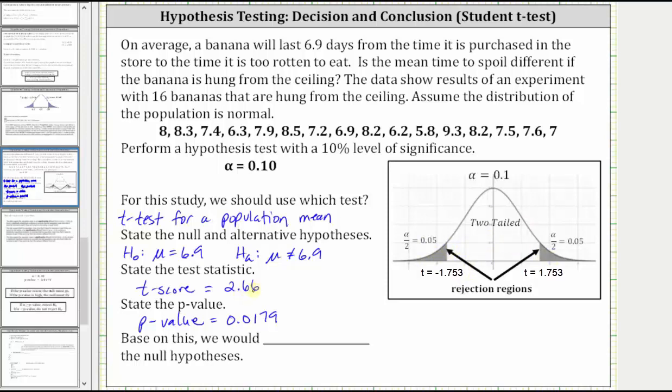And notice how a t-score of 2.66, or a t-score of negative 2.66, would fall into the rejection region, and therefore we are going to reject the null hypothesis.